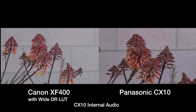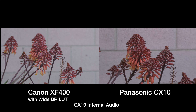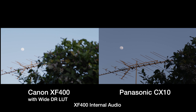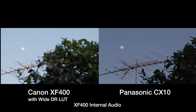I have the Canon at F4, 160 shutter speed, gain at 9, shooting at C-Log 3, 160 megabits, UHD 30p, XF-AVC. On the Panasonic I am shooting at MOV, 422 10-bit, 150 megabits, gain at 0, f-stop at 4, Cine D picture profile, 30p UHD. Both cameras are set to their native daylight white balance.